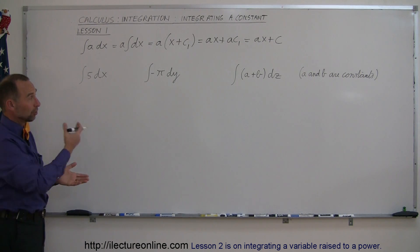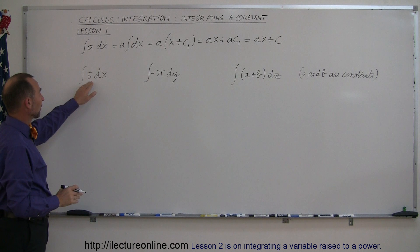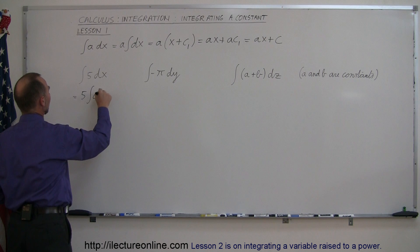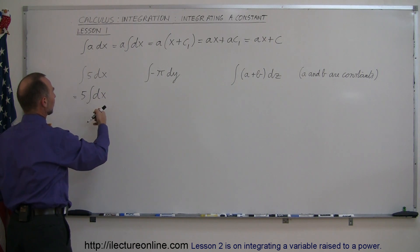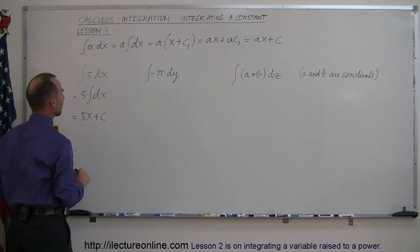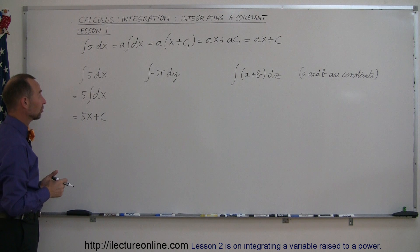To illustrate that with some examples, here we go. We have the integral of 5dx. This is equal to 5 times the integral of dx. By definition, the integral of dx is x plus a constant, multiplied by 5. So we get 5x plus the constant c. C is always what they call the constant of integration.